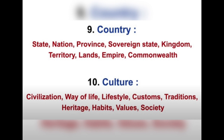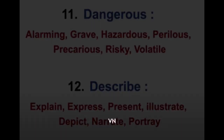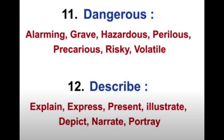Number nine is 'country.' For country you can use: state, nation, province, sovereign state, kingdom, territory, lands, empire, and commonwealth. Number ten is 'culture.' For culture you can use: civilization, way of life, lifestyle, customs, traditions, heritage, habits, values, and society.